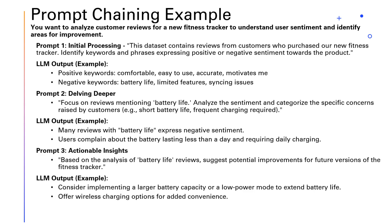With prompt chaining, you first prompt the LLM to identify keywords and phrases expressing positive or negative sentiment toward the product. Once the LLM responds with positive and negative keywords, you analyze the negative ones. Say 'battery life' was a negative keyword — you use that as input for a second prompt: 'Focus on reviews mentioning battery life. Analyze the sentiment and categorize the specific concerns raised.' The LLM responds that many reviews express negative sentiment, with users complaining about the battery lasting less than a day and requiring daily charging.